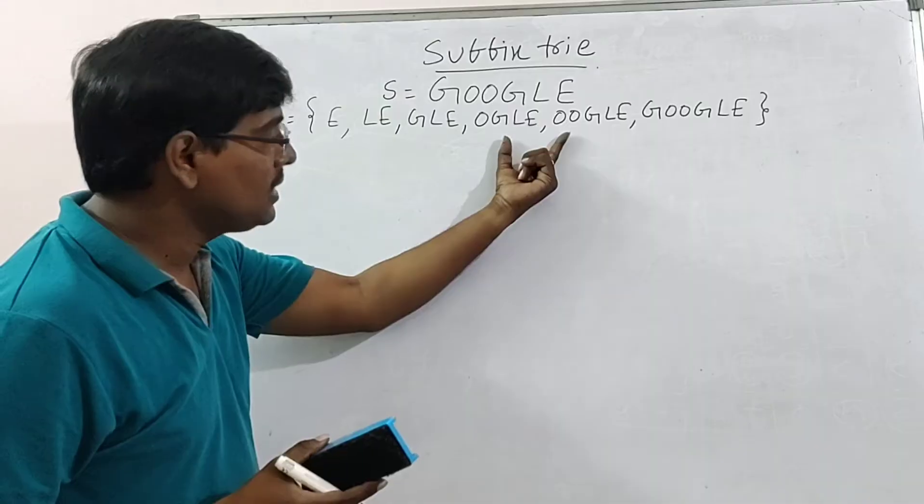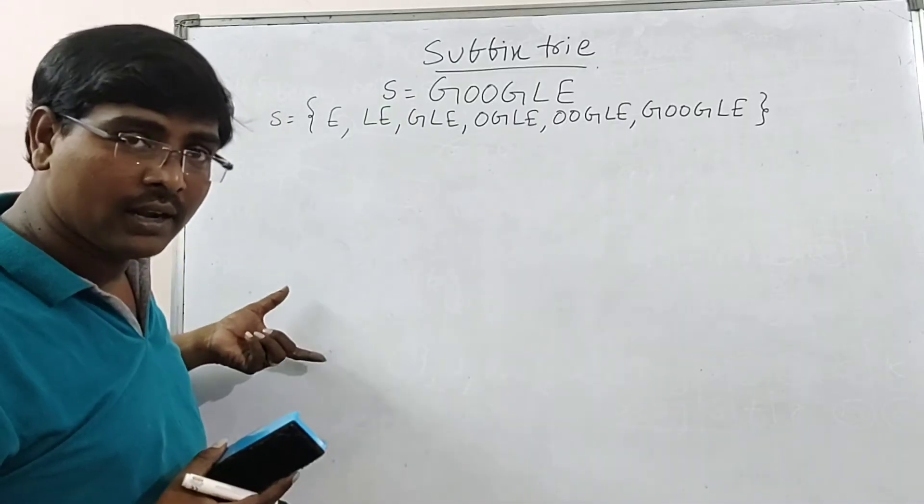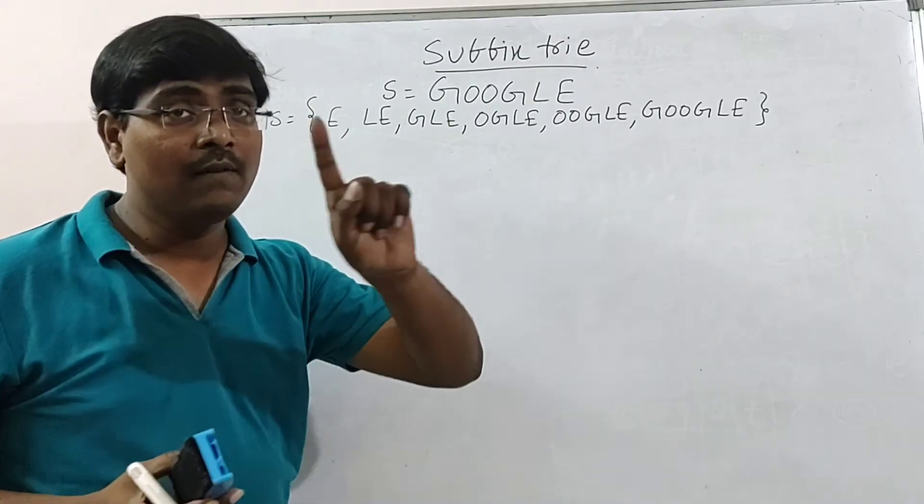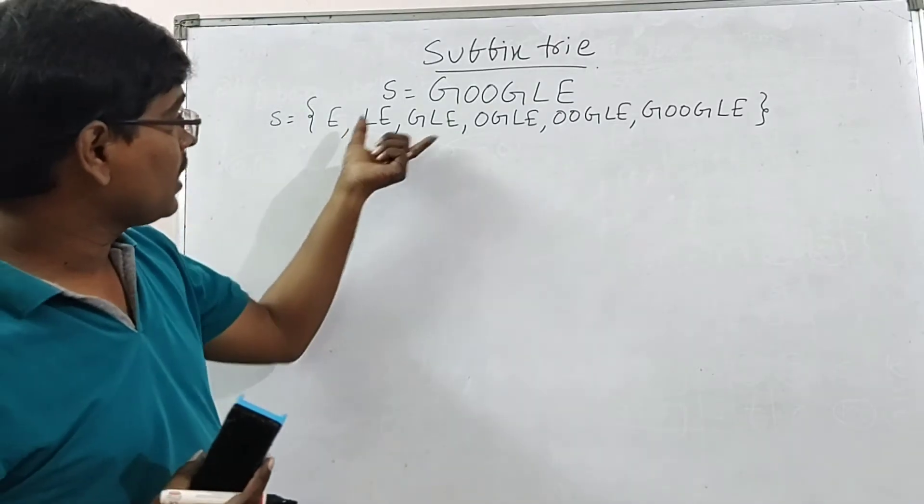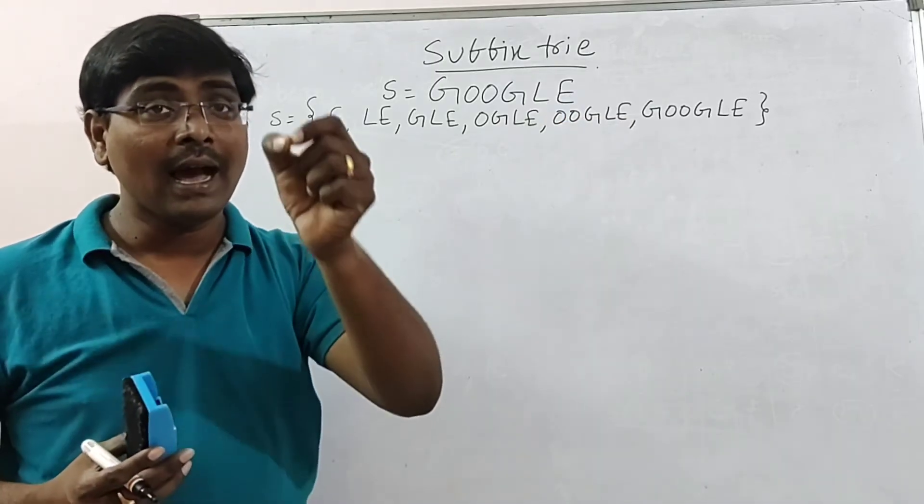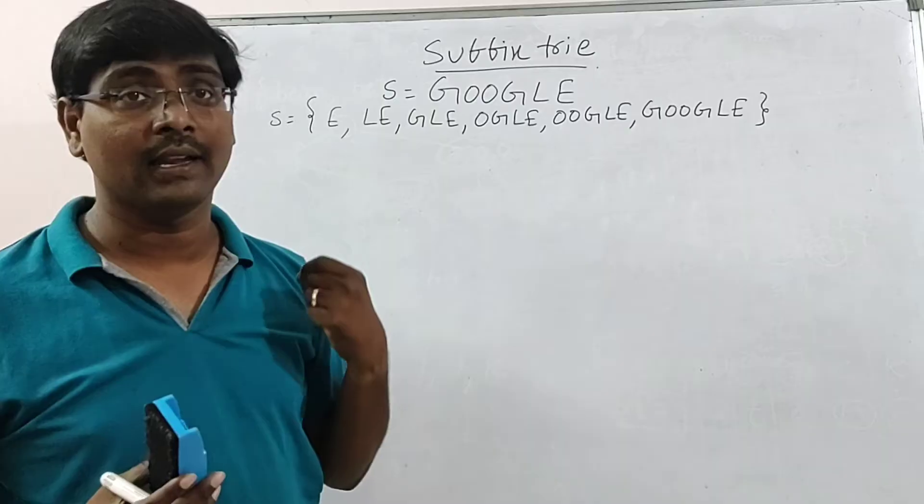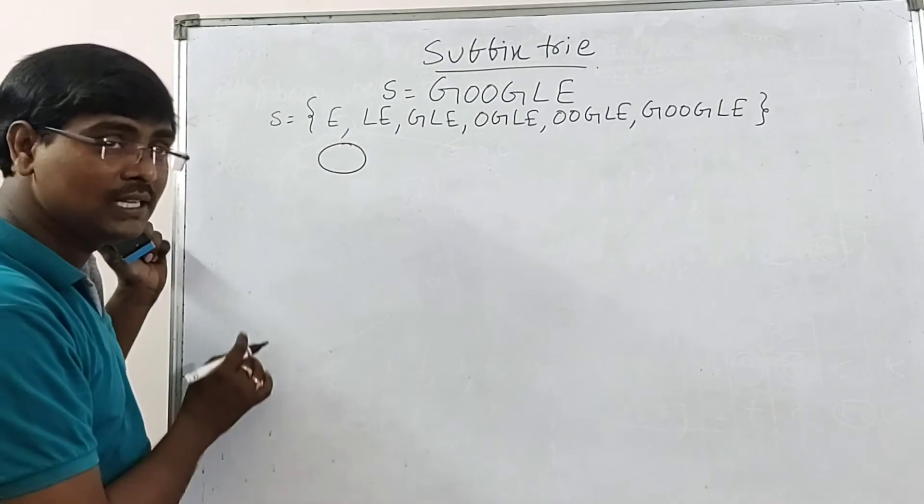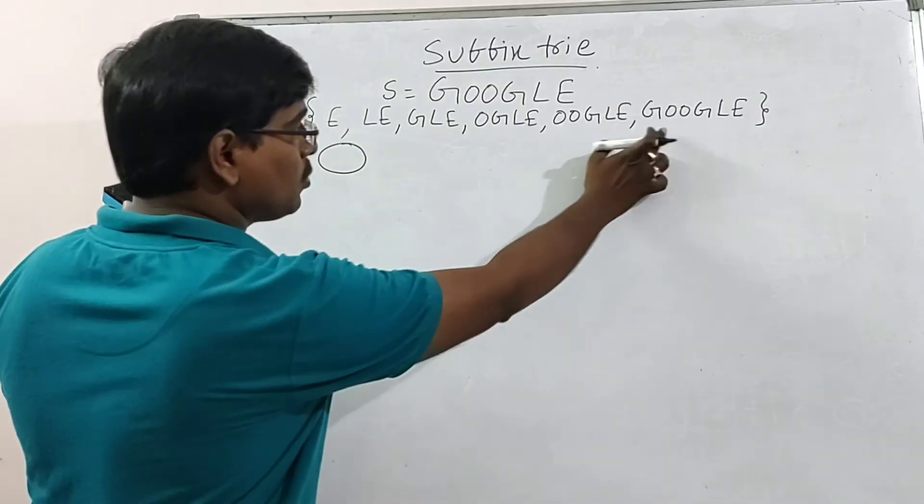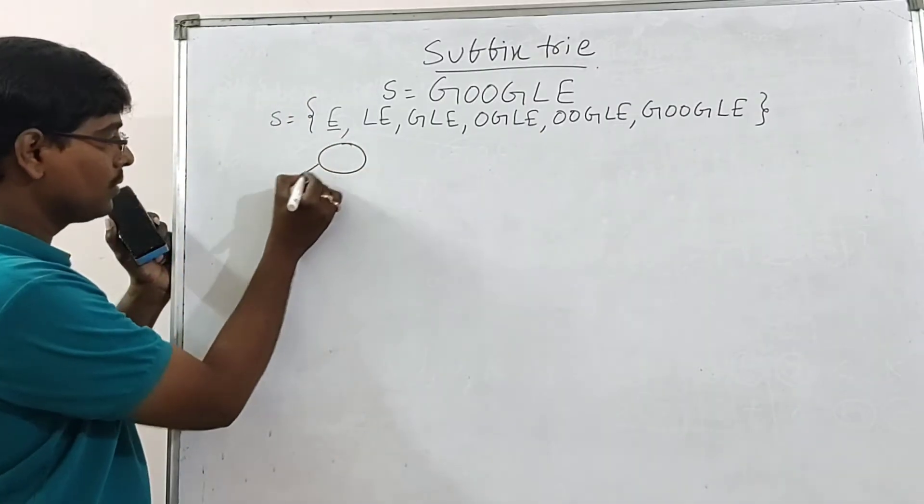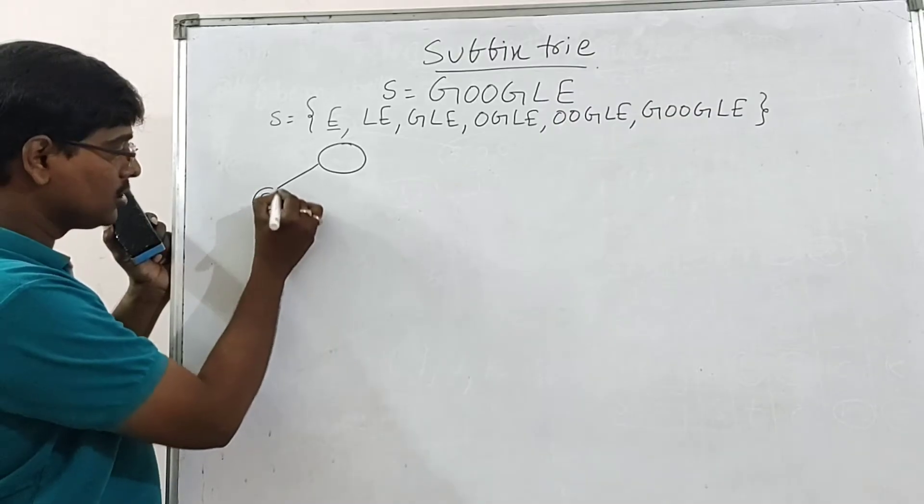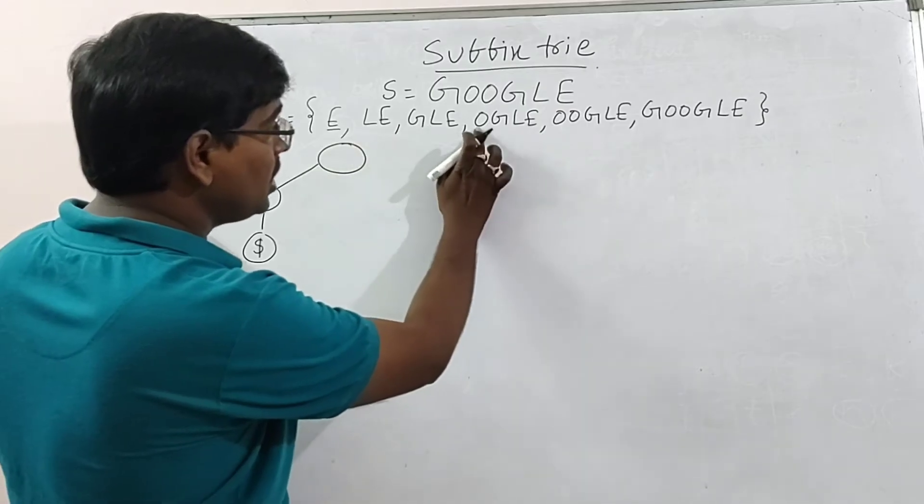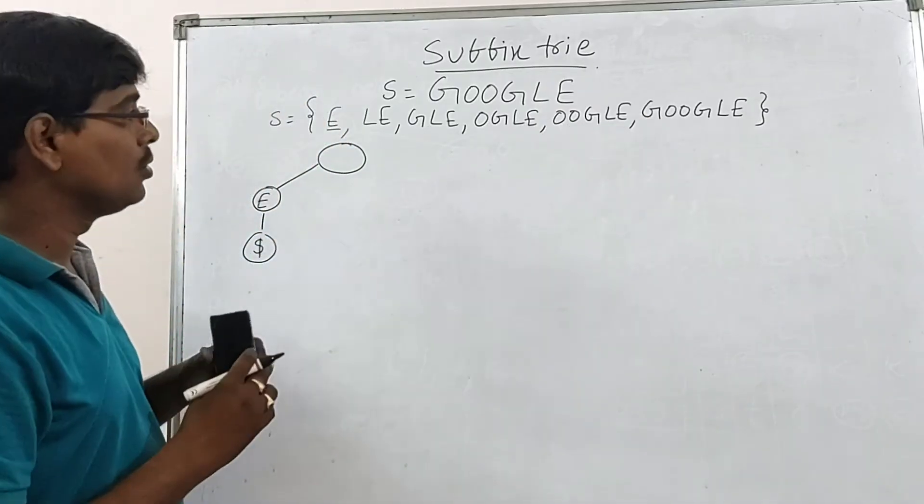Now, by using these suffixes, first to construct the standard trie and then convert the standard trie into compressed trie. Anyway, already said one point. Whatever the order you are getting, simply construct the trie in the sorted order. See this one. First root is empty. Among these one, what is the minimum value? E.